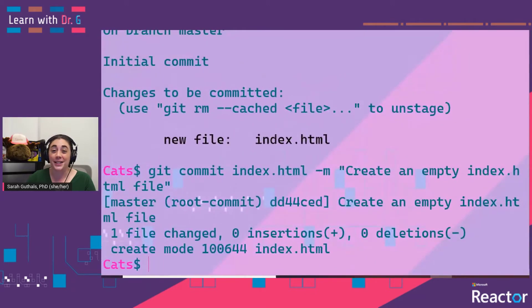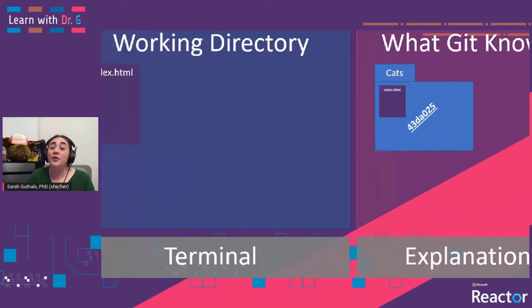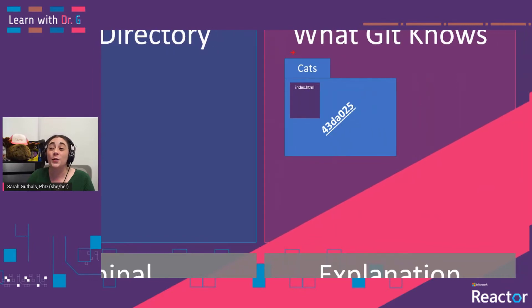We can go ahead and commit those files using a git commit command. We say git commit as the command, we specify a file — in this case index.html — and then we specify a message. This commit message, 'create an empty index.html file,' will help us know what version of our repository that commit is representing. Good commit messages are crucial to collaboration and remembering what steps you've taken. Git has now assigned a hash to that version of the repository.